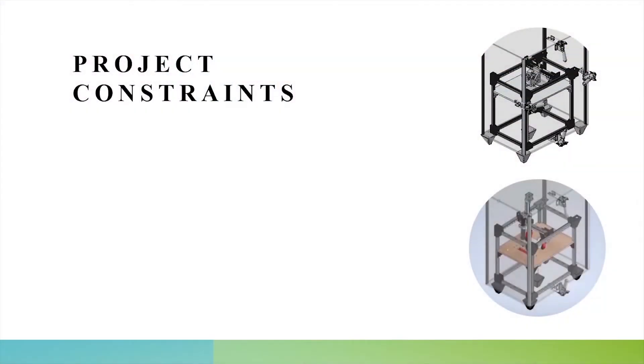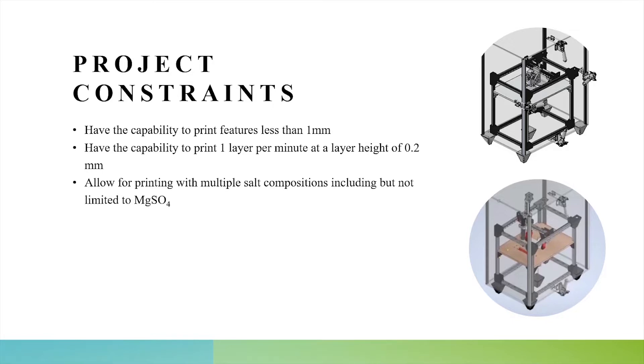Some project constraints were set up by both the project mentors and the senior design team. The first being having the capability to print features less than one millimeter. Next, having the capability to print one layer per minute at a layer height of 0.2 millimeters. Then being able to print with multiple salt compositions including but not limited to magnesium sulfate or MGSO4. Completing our objectives within the time allotted and completing our objectives within the $2,000 budget we were given.